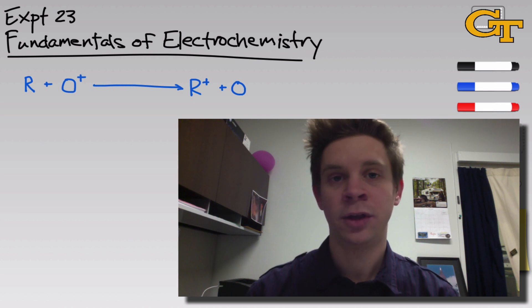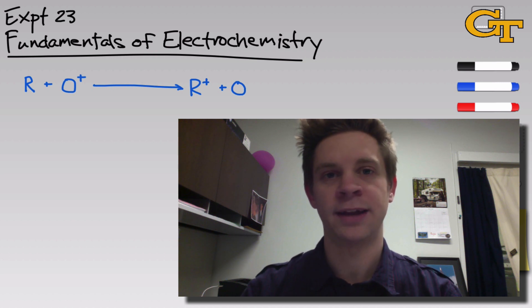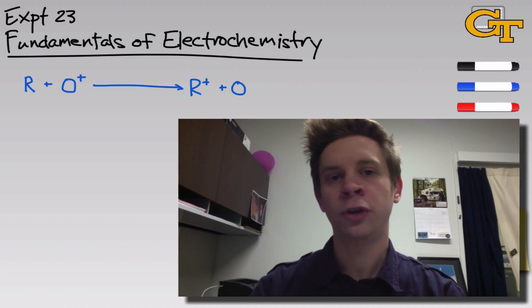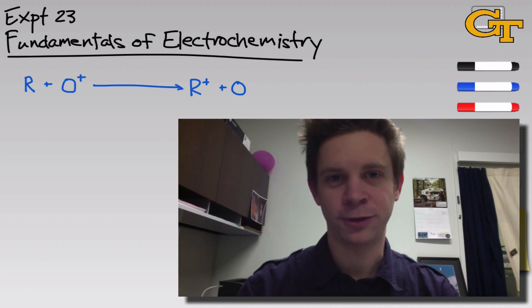In this lab, you'll see one of the earliest examples of a battery, and you'll construct various half cells and connect them together to create galvanic cells. We'll also use electrical energy to drive a reaction forward. That's known as electrolysis, and we'll see a basic redox reaction in action. In this video, I'm going to introduce you to a little bit of the theory and some of the experimental pointers for Experiment 23.